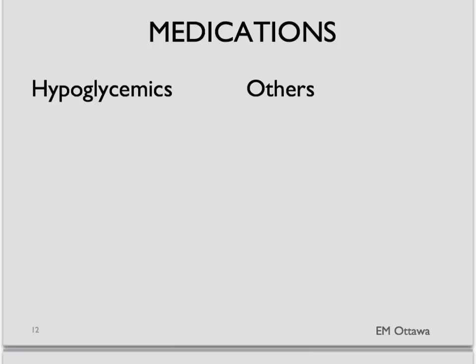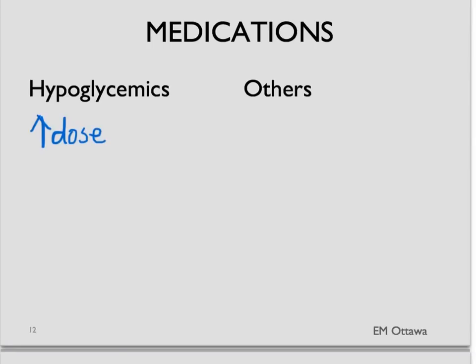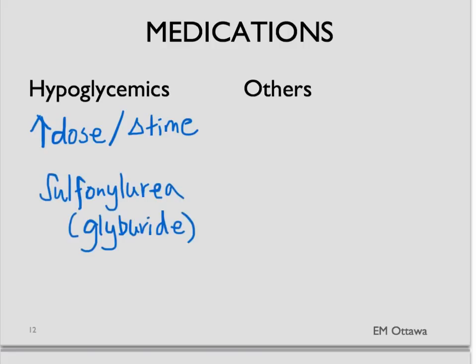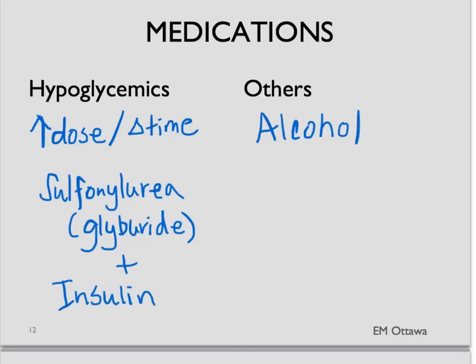This is a big and common category, divided into two parts. First, medications which are designed to decrease blood sugar — hypoglycemics — such as those a diabetic would be taking. However, if the patient has taken too much, or taken at the wrong time, or not eaten enough, or exercised too much, that can result in hypoglycemia. These medications include sulfonylureas such as glyburide, and various forms of insulin. There are also other less obvious drugs that decrease blood sugar: the main one is alcohol, since alcohol suppresses gluconeogenesis. Other medications include beta blockers and salicylates.